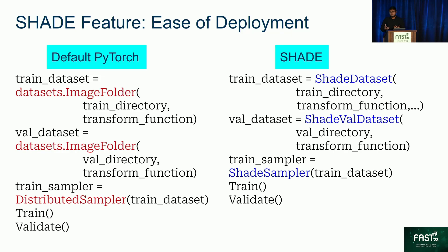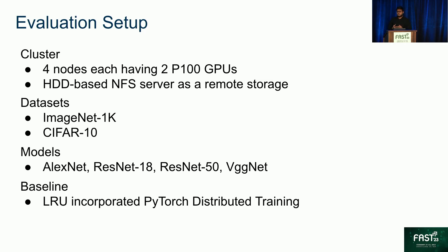Shade is incredibly easy to deploy and use. For example, a pseudocode for training would only require minor changes to that used in PyTorch — instead of the dataset and samplers used in PyTorch, we would need to use the Shade dataset and the Shade sampler. To evaluate Shade, we built a cluster of four nodes, each having two GPUs on the Chameleon cloud. For our remote storage, we used the HDD-based NFS server. We evaluated Shade against LRU-incorporated distributed training in PyTorch on the ImageNet and CIFAR-10 datasets using four models: AlexNet, ResNet-18, ResNet-50, and VGGNet.